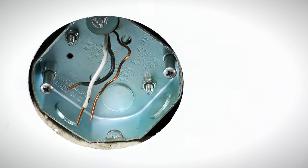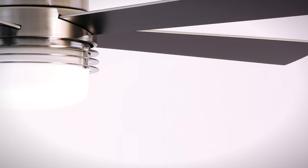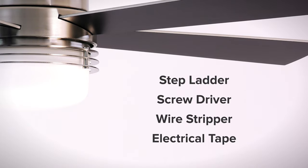To install the fan you will need a UL listed outlet box that is rated for fan support of up to 35 pounds. You will also need a stepladder, screwdriver, wire stripper, and electrical tape.